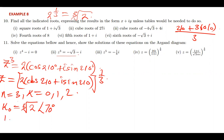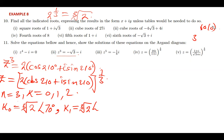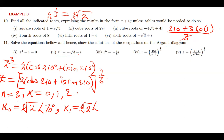For z1, the magnitude is still the cube root of 2. The angle for z1 is (210 + 360 × 1) divided by 3. That gives us 360 divided by 3, which is 120, plus 70, giving us 190 degrees.